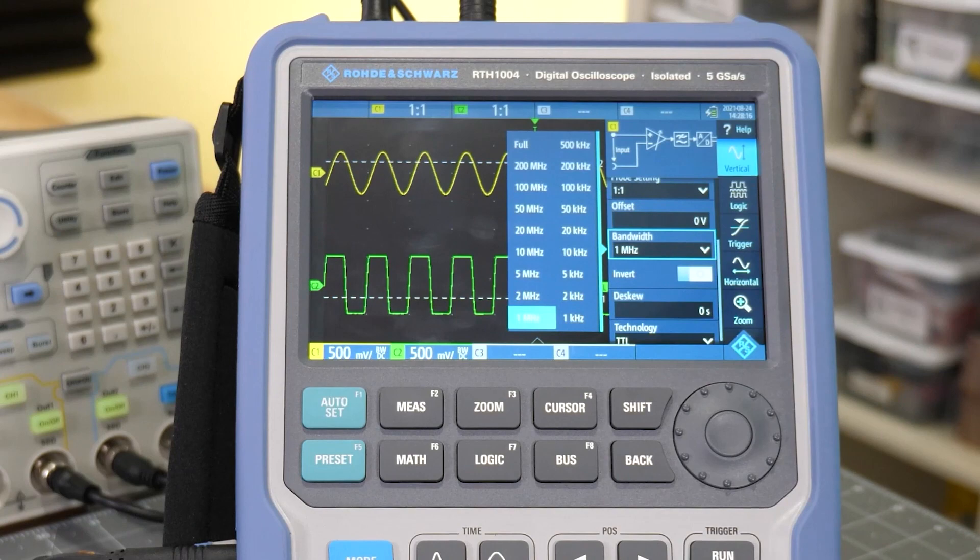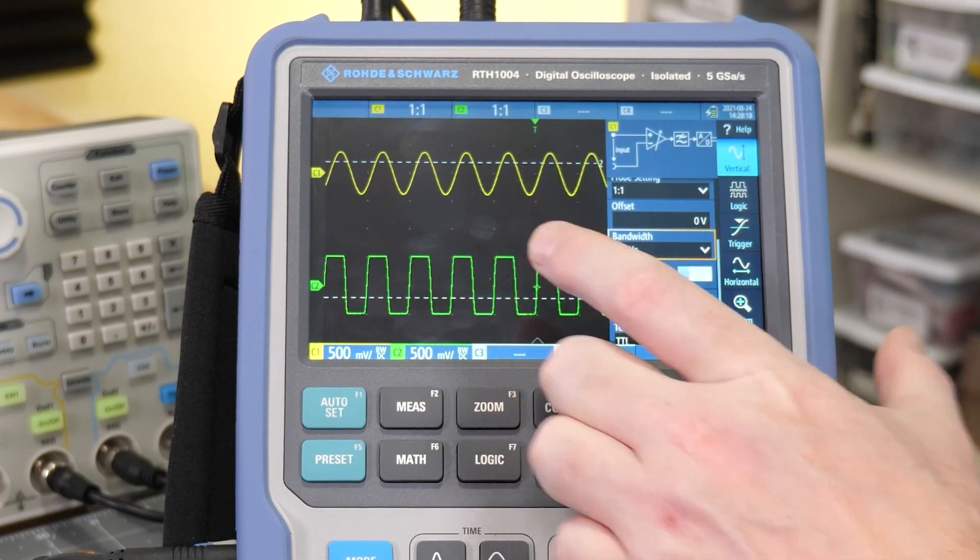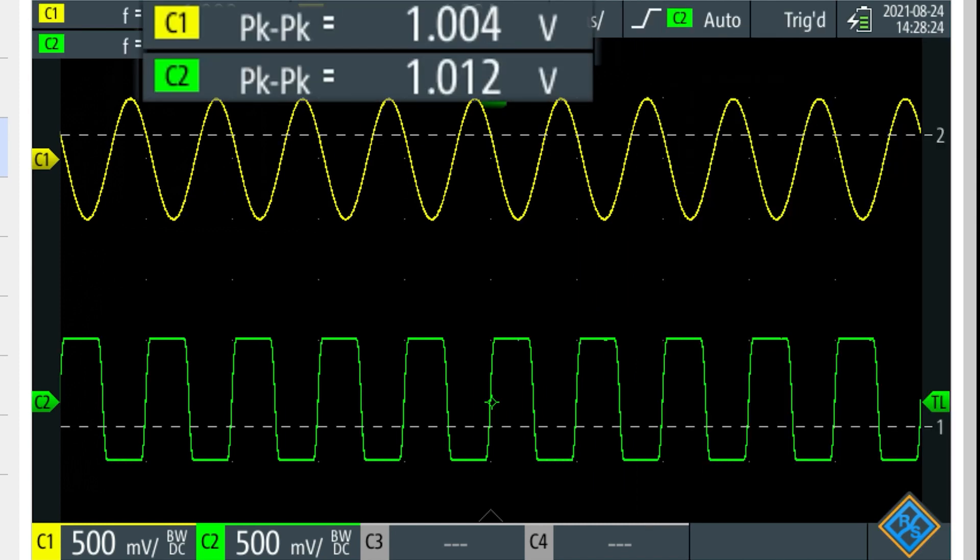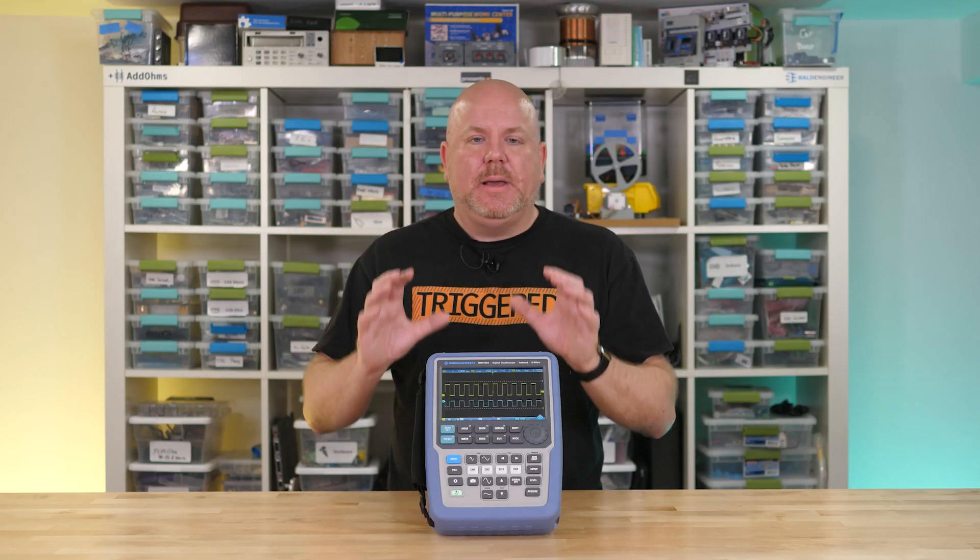Now, by increasing the bandwidth on the sine wave's channel to 5 MHz, the wave shape doesn't change, but it gets larger, and now we measure the correct 1 volt peak-to-peak.